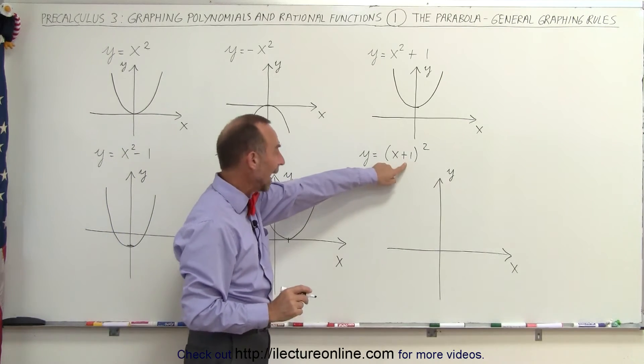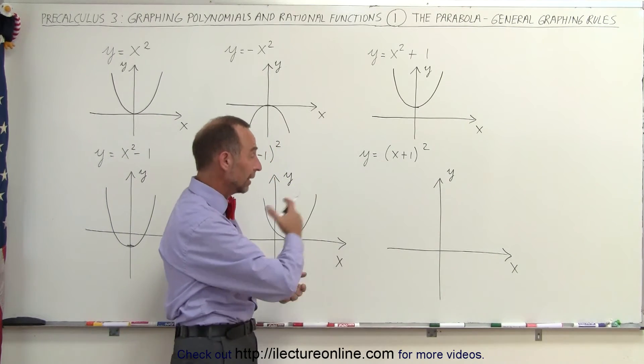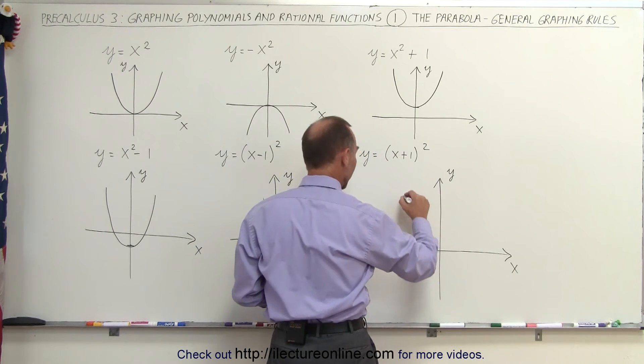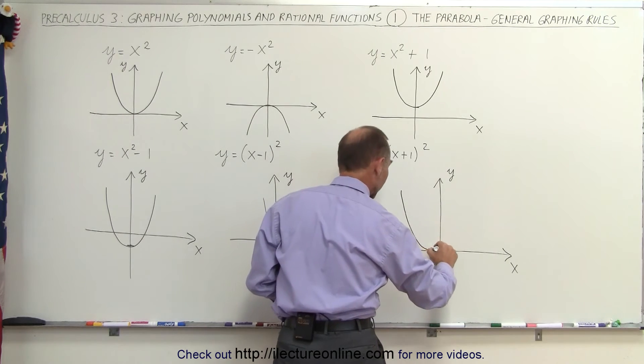If we add a constant like that, that means we take the whole parabola, the graph of the parabola, and move it to the left. So it will be at minus 1, and the function will look like this.